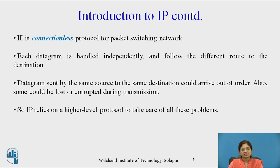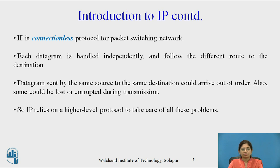IP is a connectionless protocol for packet switching networks. In connectionless delivery, each datagram is handled independently and follows a different route to the destination. Datagrams sent by the same source to the same destination could arrive out of order. Also, some could be lost or corrupted during transmission. So IP relies on a higher level protocol to take care of all these problems.